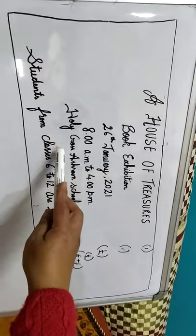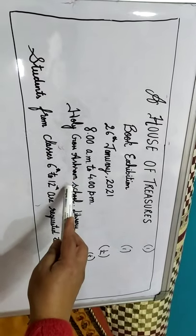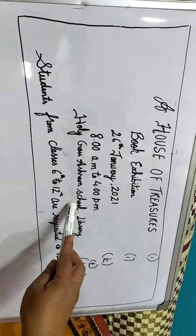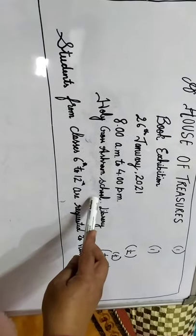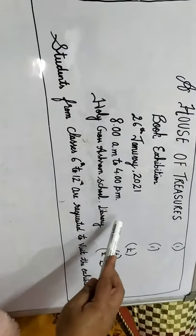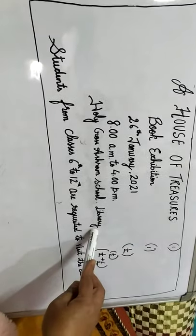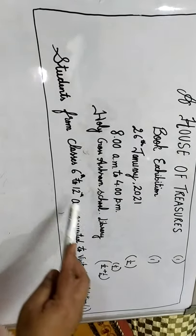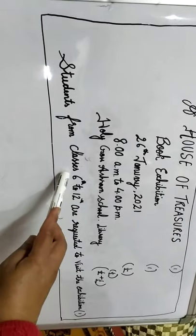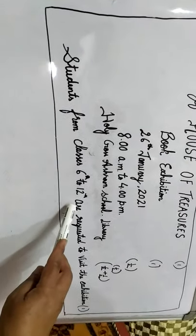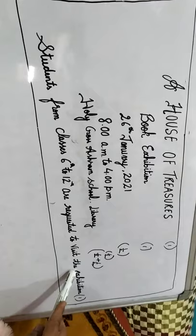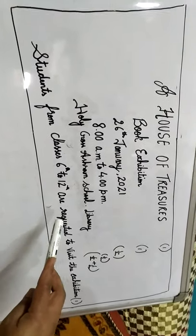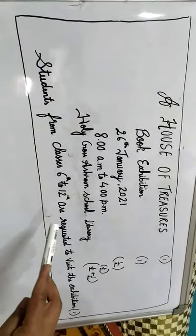Then you have to write the venue. The venue is Holy Cross Ashram School, and in Holy Cross Ashram School, the exhibition will be held in the library. Then, to whom we are sending the information — the students from classes 6th to 12th are requested to visit the exhibition. This notice is related to students from class 6th to 12th.